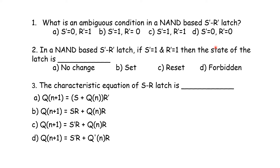This state is also known as the invalid state, as the system goes into an unexpected situation. The answer is option D: S' = 0 and R' = 0.